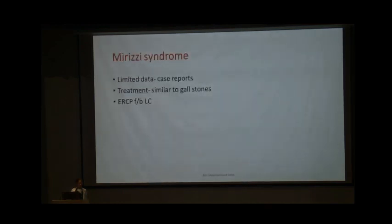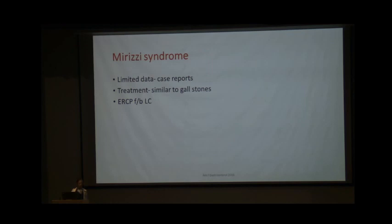For Mirizzi syndrome, data is mostly in the form of case reports describing feasibility of surgery in this setting. Management is similar to CBD stones: if the patient is jaundiced or has cholangitis, drain first, then proceed with cholecystectomy — usually a subtotal cholecystectomy using the gallbladder wall to patch the bile duct defect. Drainage procedures add to surgical extent and should be avoided where possible.